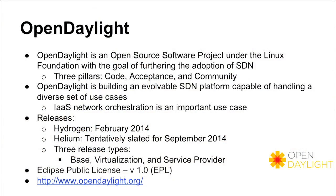The next open source plugin is Open Daylight — an open source software project run by the Linux Foundation whose main goal is to further the adoption of SDN. Open Daylight has three pillars: code, acceptance, and community, and has modeled itself somewhat after OpenStack's development and code review process. Open Daylight is building an evolvable SDN platform; Infrastructure as a Service network virtualization and orchestration is a key use case. The first release, called Hydrogen, came out in February; a Helium release is tentatively planned for the fall.